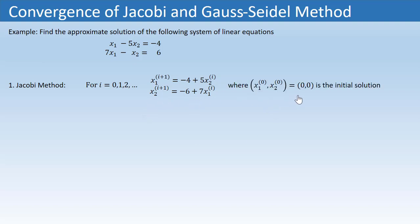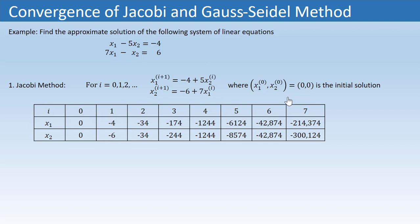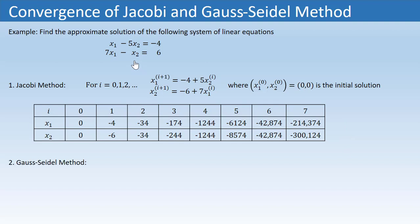If we take the initial solution as (0, 0), then the approximate solutions up to the seventh iteration can be seen in this table. We can notice that the approximate solutions of x1 and x2 are not converging to any fixed value — rather they are diverging. So in this case we say that the solution is not convergent. Let's try to solve this system using Gauss-Seidel method and see whether we can fix this issue.